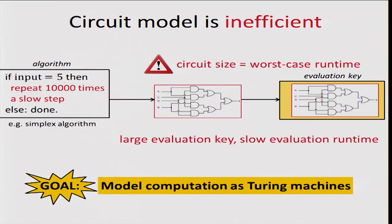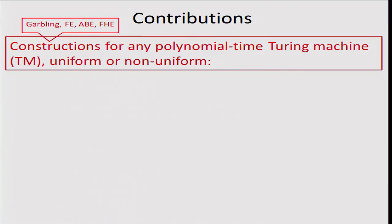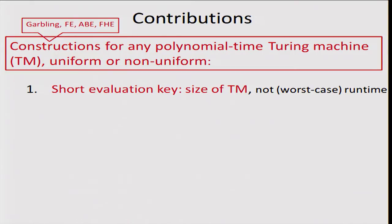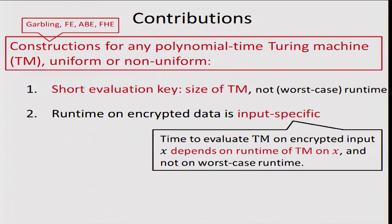The goal of our work is to provide schemes for computing on encrypted data for Turing machines. At a high level, our contribution provides constructions for all the schemes I mentioned — garbling, functional encryption, attribute-based encryption, and fully homomorphic encryption — for any polynomial-size, polynomial-time Turing machine, uniform or non-uniform. By a construction for Turing machines, I mean: first, a short evaluation key whose size depends only on the description of the Turing machine and not on the worst-case running time.